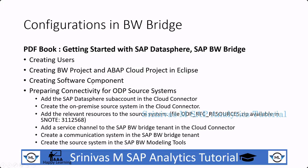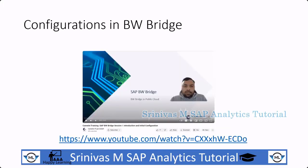The first three points — user creation, ABAP project creation, and software components — I didn't show technically. For the ODP source system connections, the ones under the BTP section I am not able to show practically because of access issues. However, creating communication systems and source system connections in the Eclipse modeling environment are clearly explained in one of my previous videos done through my company. The link for that video is provided in the description below, where I explained creating communication systems in the BWBridge cockpit and ODP source system connections in detail.